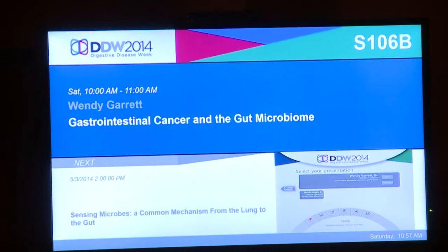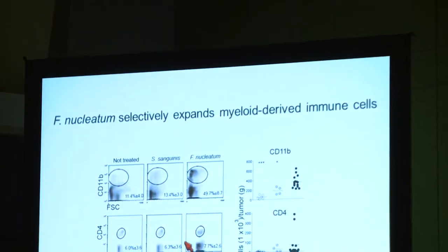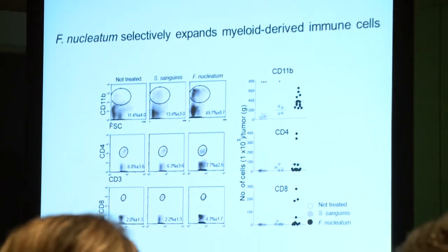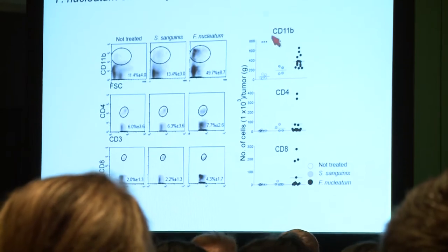I gave an AGA-sponsored state-of-the-art lecture on GI cancer and the gut microbiome. I talked about the gut microbiome and its role in human health and disease, and ongoing research in my lab and others about organisms associated with GI malignancies. I focused on the role of fusobacterium in colorectal cancer, which is part of a deep collaboration between my lab and Matthew Meyerson's lab.